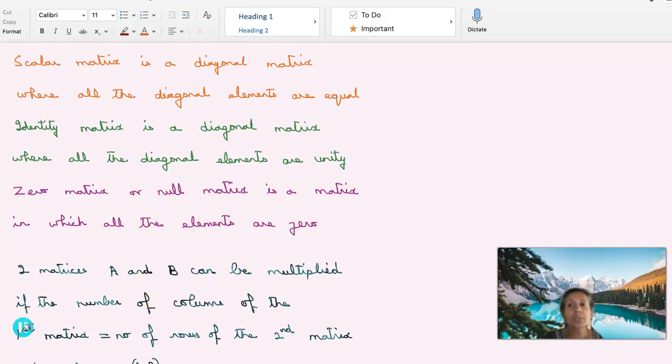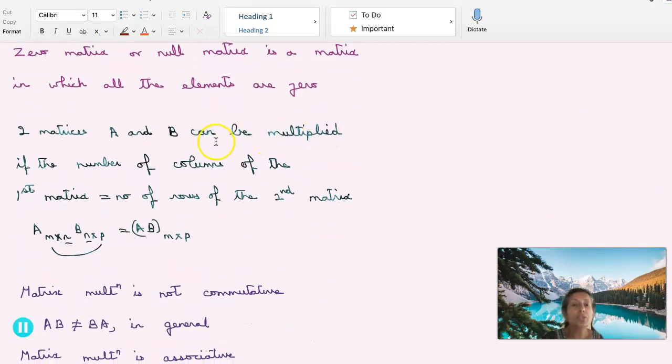Coming to matrix multiplication, two matrices A and B can be multiplied if the number of columns of the first matrix equal to number of rows of the second matrix. So if A has m rows and n columns, B has n rows and p columns, number of columns of A is n equal to number of rows of B. So the product will have m rows and p columns. So you take the number of rows of A and the number of columns of B. That will be the product matrix AB.